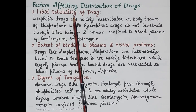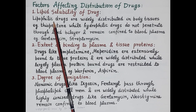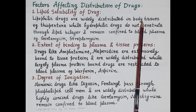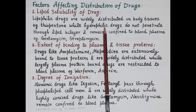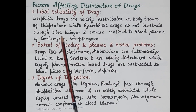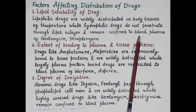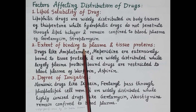Now let's understand the factors affecting distribution of drugs one by one. The first factor is lipid solubility. Lipophilic drugs — fat-soluble drugs — easily pass through cell membranes, which are made up of phospholipids, and are therefore widely distributed in the body's extravascular tissues. For example, thiopentone is highly lipid soluble and widely distributed in extravascular tissues. In contrast, hydrophilic drugs do not penetrate the lipid bilayer of cells and remain confined to the blood plasma — for example, gentamicin and streptomycin.